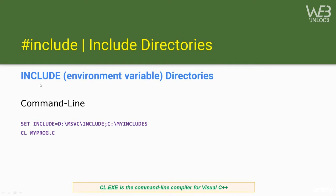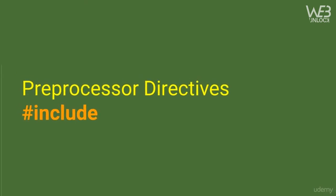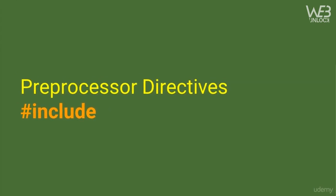You can also specify the INCLUDE environment variable: for example, D:\msvc\include;C:\my_includes — semicolons separate multiple directories. When you compile, the program also looks in these directories for include files. If not using the command line, in Visual Studio go to Project Properties, Visual C++ Directories, and the Include Directories field — this is where you specify additional include directories to search from within the Visual Studio IDE.